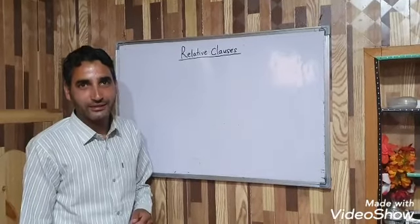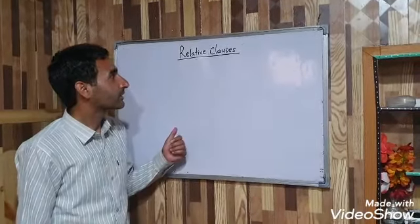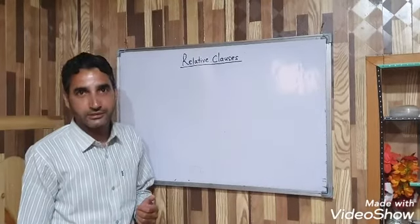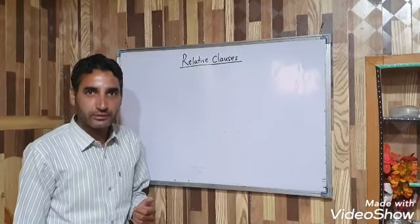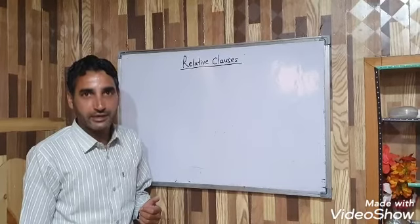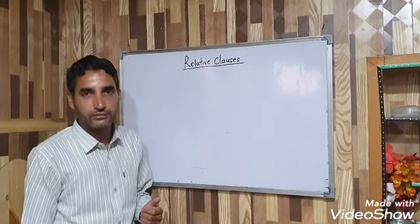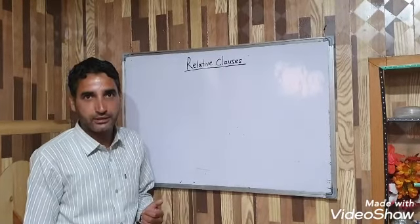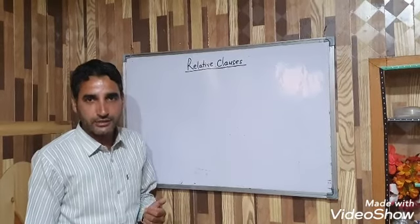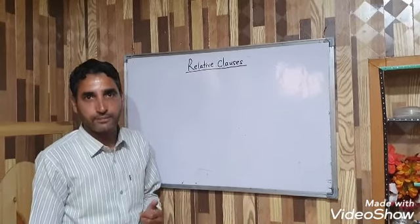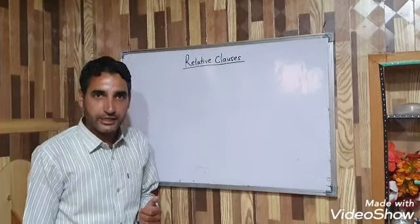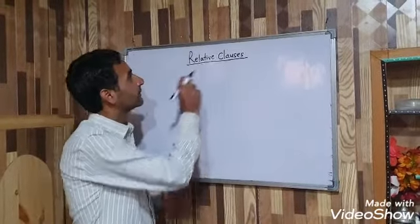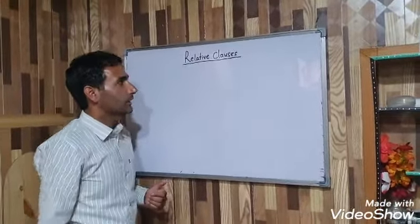Dear students, today our topic is Relative Clauses. Now in my previous lectures, when we talked about Conditional Clauses, at that very time I gave you a brief overview of what a Clause means. A group of words containing a subject and a verb which forms a sentence or a part of a sentence is called a Clause, and a sentence must include at least one main Clause. Now let's learn about Relative Clauses.